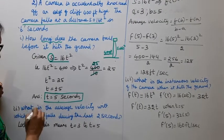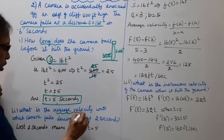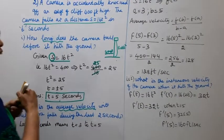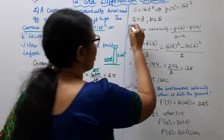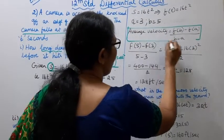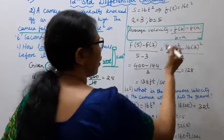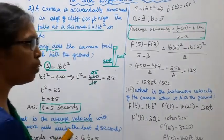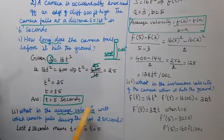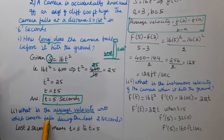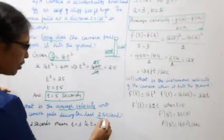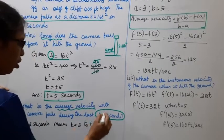Second sub-question: what is the average velocity? We need to find the average velocity with which the camera falls during the last 2 seconds.